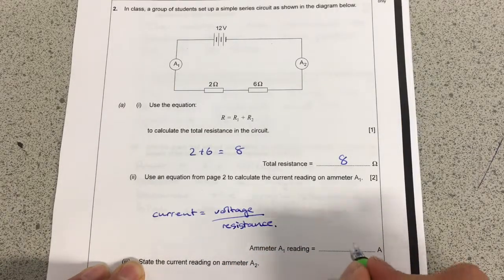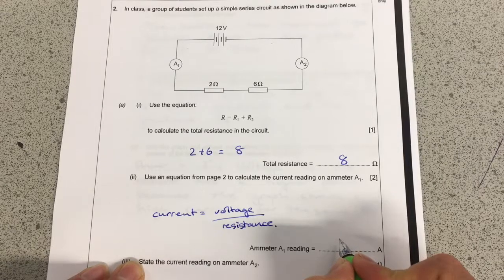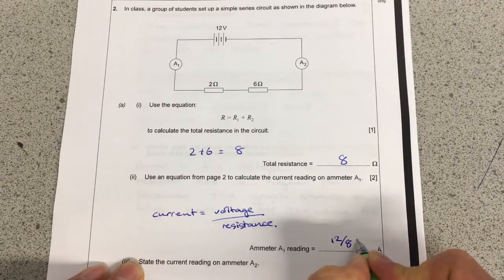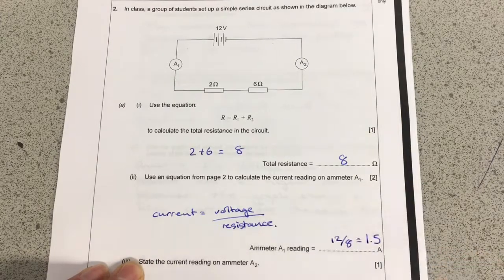And then, so we're going to do, sorry one of my colleagues has just knocked on the door, so we're going to do 12 divided by 8 and that's going to give me 1.5 amps.